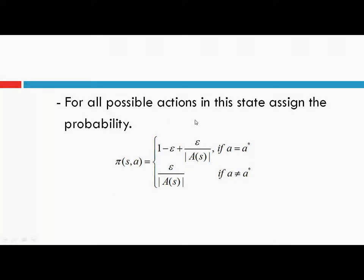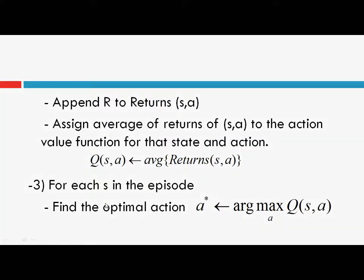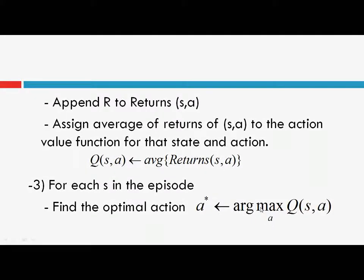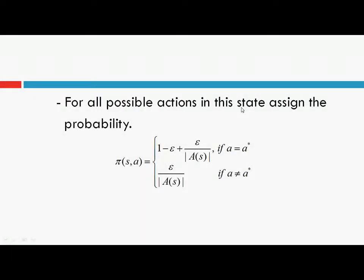For all possible actions in a particular state, say s1, we calculate the optimal action. Now for each possible action in state s1 we assign probabilities: pi(s1, a) = 1 - epsilon + epsilon / |A(s)| if a is a-star, and epsilon / |A(s)| if a is not equal to a-star. So if a is an optimal action for state s1, we assign it the higher priority, and if it is a non-optimal action, we assign it the lower priority.